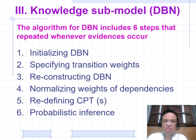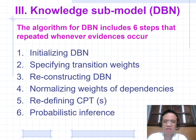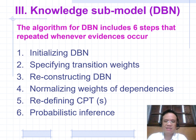The algorithm runs in most systems repeatedly whenever evidence occurs. Step 1: Initialize DBN. Step 2: Specify transition weights. Step 3: Reconstruct DBN. Step 4: Normalize weights of dependency. Step 5: Define CPT. Step 6: Apply Bayesian inference.